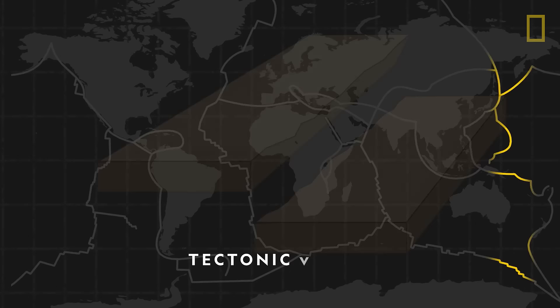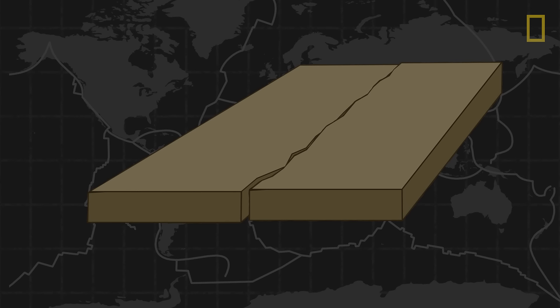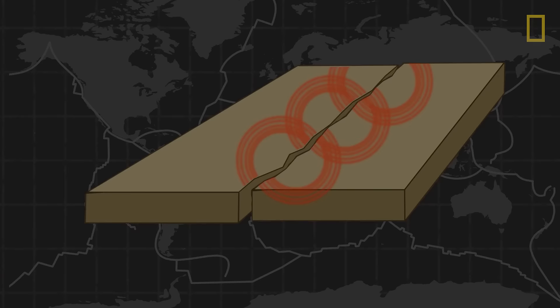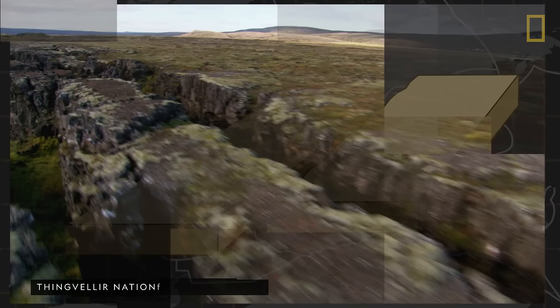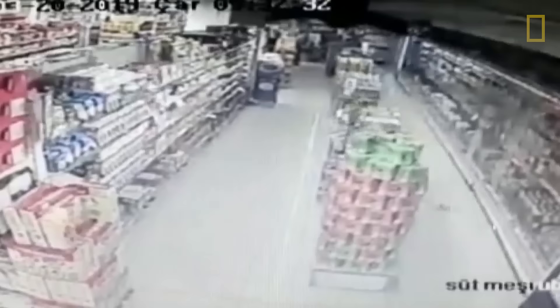Tectonic plates are constantly moving either against, away, along, or underneath each other. But sometimes their edges may catch and stick. The plates, however, continue to move, or at least attempt to. Energy from this attempted movement builds around the edge's sticking point, creating immense pressure until the edges are forced to let go and the plates slip. This causes a sudden and powerful release of energy, so powerful that it breaks the Earth's crust. This fracturing emits shockwaves through the ground and causes intense vibrations, or quakes.